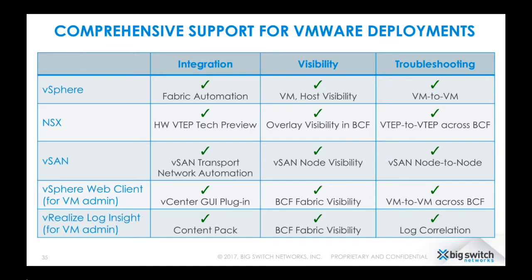Additional supported VMware solutions include Horizon VDI, VIO, and VMware's container solution. The key advantages of using Big Cloud Fabric for virtualized infrastructure are the deep integration between BCF and VMware — enabling fabric automation, cross-domain visibility, and troubleshooting tools critical for an agile data center. BCF's intent-based approach to networking eliminates mundane operations and unnecessary complexity, allowing the IT organization to operate faster and more efficiently.